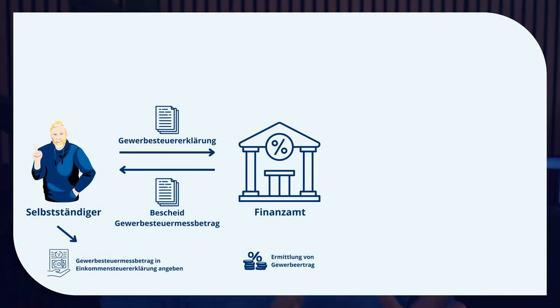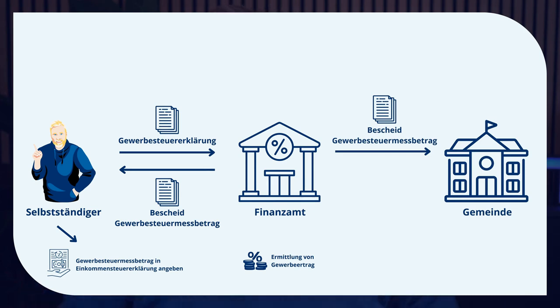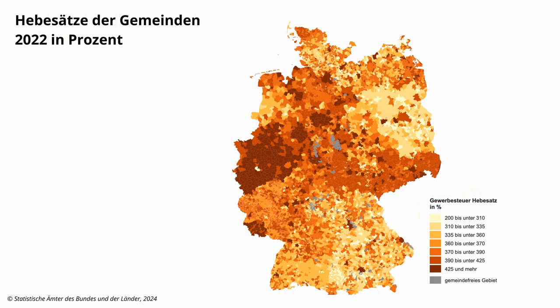You are not the only one who receives this notice. In the background, the tax office also sends the trade tax assessment amount to the responsible municipality, which then calculates the trade tax to be paid based on the assessment amount and the specific assessment rate applicable to that municipality. This assessment rate is determined by each individual municipality — it can be 300%, 400%, 450%, and so on. This leads to higher trade tax burdens in some municipalities than others.